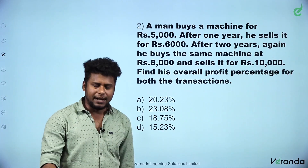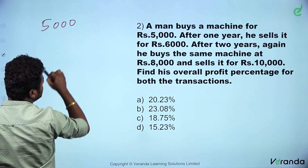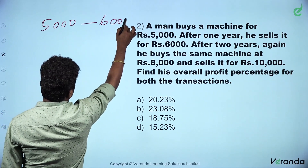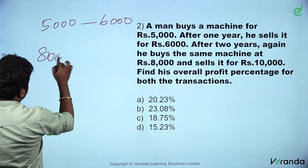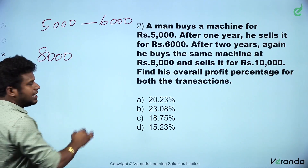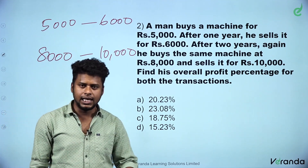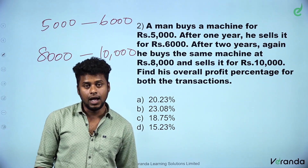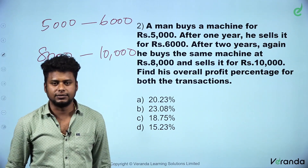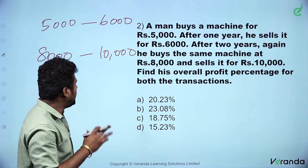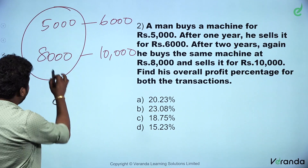A man buys a machine for Rs. 5,000. He sells it for 6,000. Then he buys the same machine for 8,000 and sells it for 10,000. So total cost price is 8,000 plus 5,000 equals 13,000.